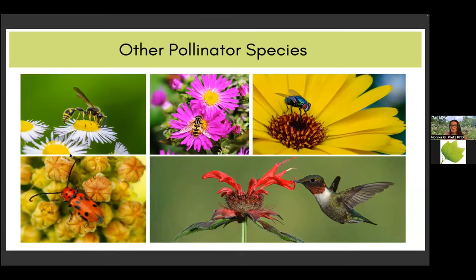There are many animals that perform pollination services. 66% are bees — they are the most important. Butterflies and moth species perform about 5% of pollination services, but there are so many more species. Beetles are very important pollinators — most people don't think of them, but they're responsible for more than 9% of pollination services. Wasps, flies, and hover flies are also very important pollinators. And of course, hummingbirds — and in some parts of North America, bats have an important part in pollination.